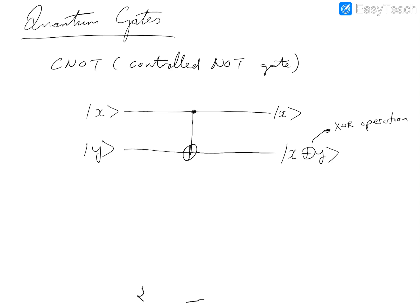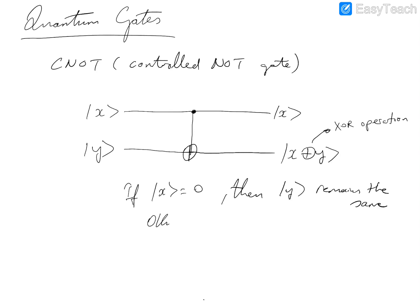The top input is the control bit. It controls the output and basically inverts the second input only when the control bit is 1. So if X is equal to 0, then Y remains the same. But if X is equal to 1, then it flips Y — 0 becomes 1 and 1 becomes 0.